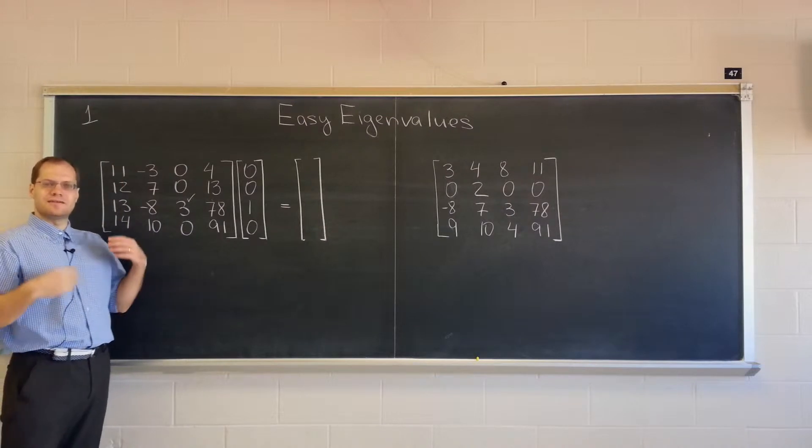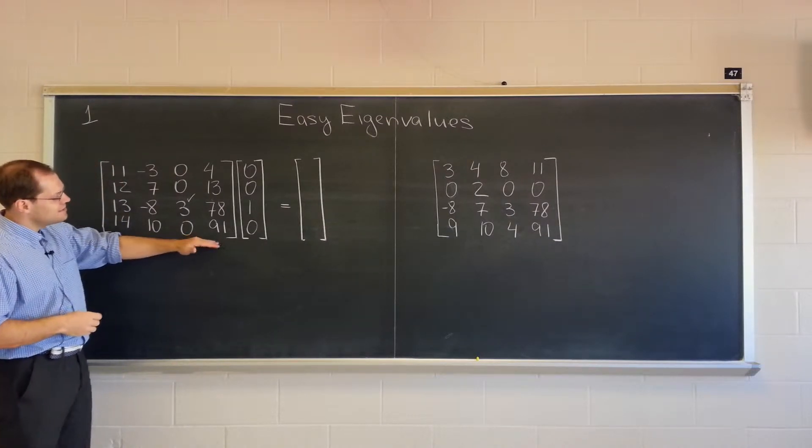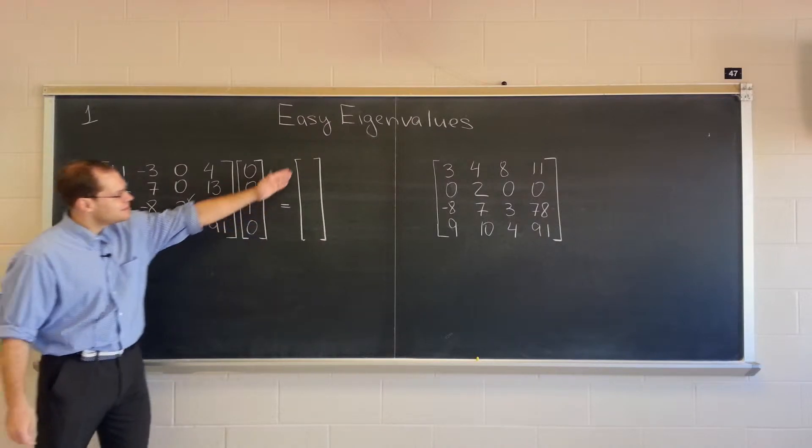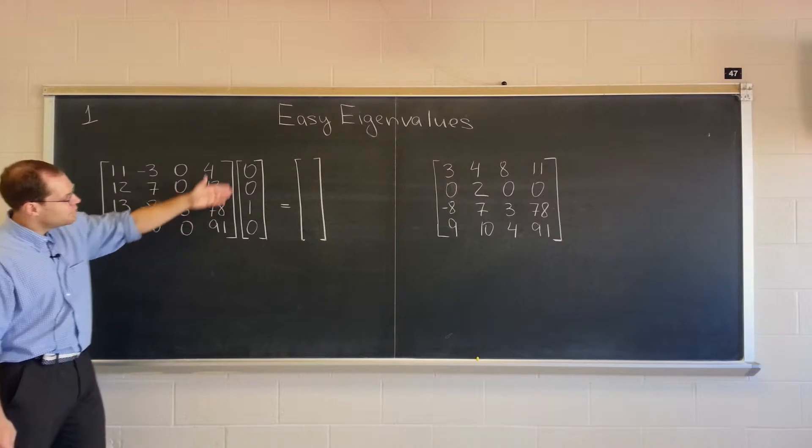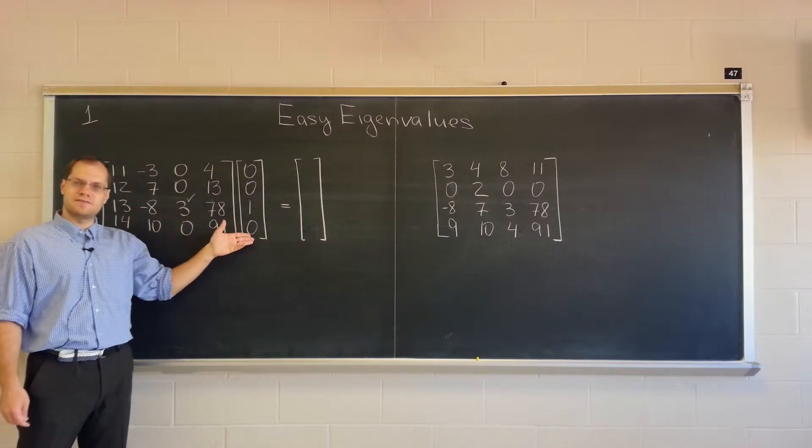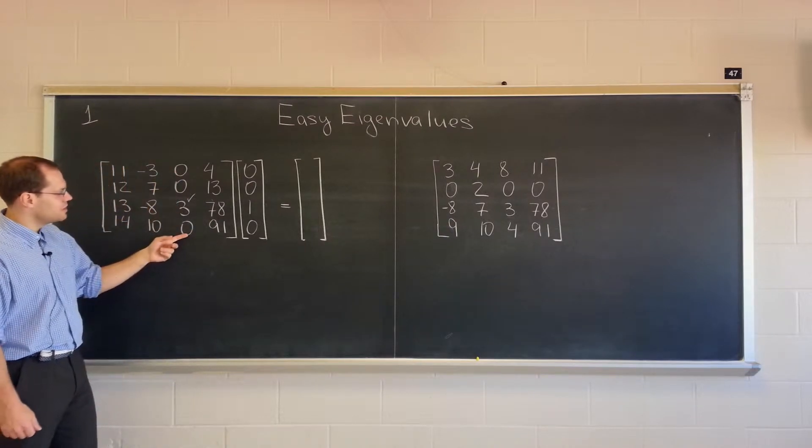I invite you to take the column perspective of matrix multiplication, and realize that this product is a linear combination of the columns of this matrix, where the coefficients come from this single vector. And of course, the only surviving column in this combination will be the third one,